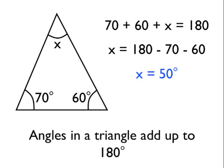So 180, take away 70, take away 60, is in fact 50 degrees. So angle x is 50 degrees.